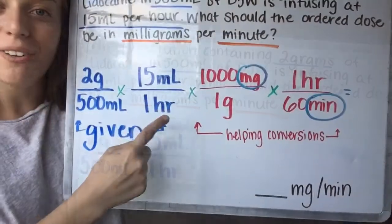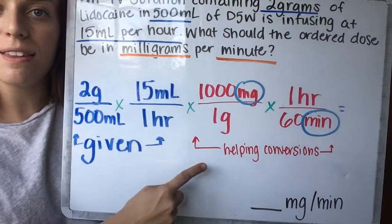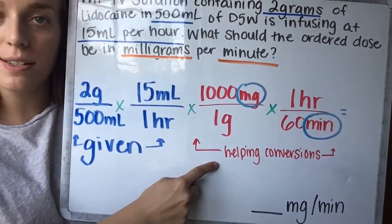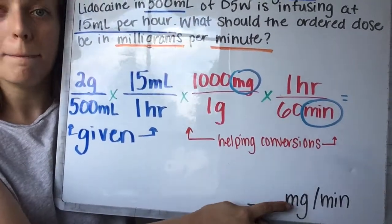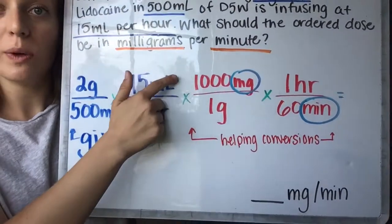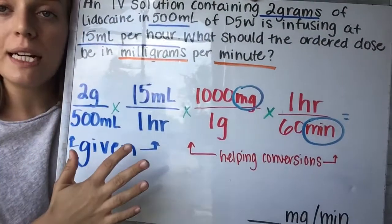All right, I've added here that these were our givens—we just saw that—and that these are helpful conversions. So I've strategically put them so that I'm going to end in milligrams over minutes. So we have milligrams on the top and we have minutes on the bottom.